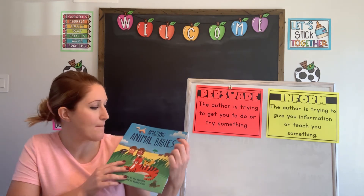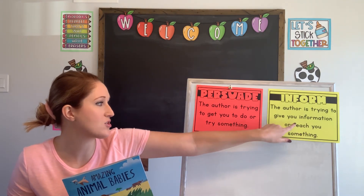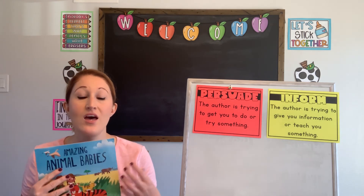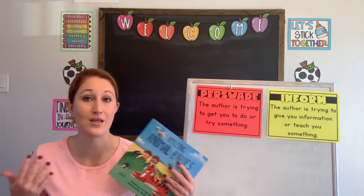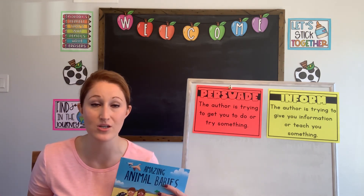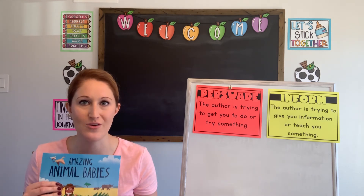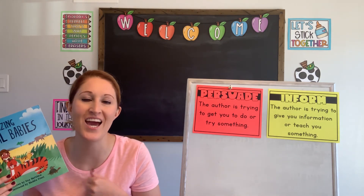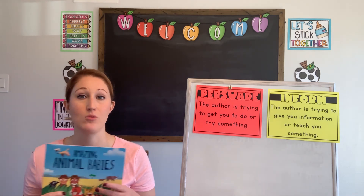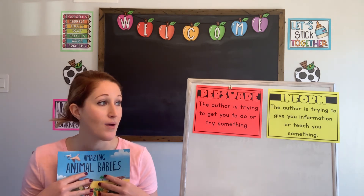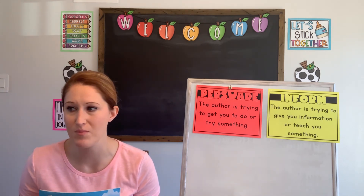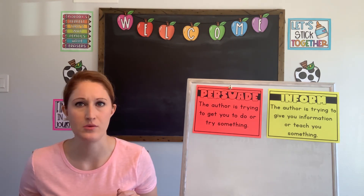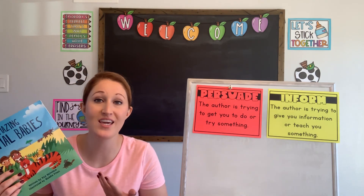Today we read the book Amazing Animal Babies — that's an informational book where the author is trying to give you information or teach you something. In this book, we were able to learn about animal babies and the ways in which they grow up — how they're born, how they get their food, how their families protect them from predators. We learned so much new information. You might want to reread it if you're doing a presentation about animal babies, or if you went to the zoo and wondered why a mama elephant does what she does — a book like this can help answer those questions.